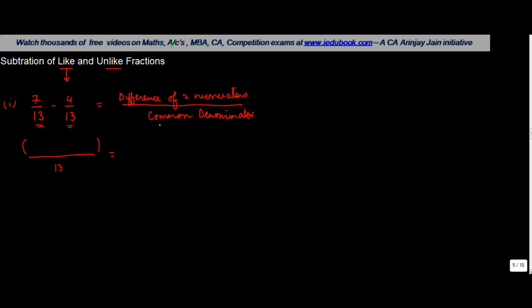So I've taken the common denominator out here, the numerator will be the difference of two numerators. So we do 7 minus 4. We know 7 minus 4 is 3 and the denominator remains 13 as it is. So this was insofar as the like fractions were concerned. Let's see about the unlike one.